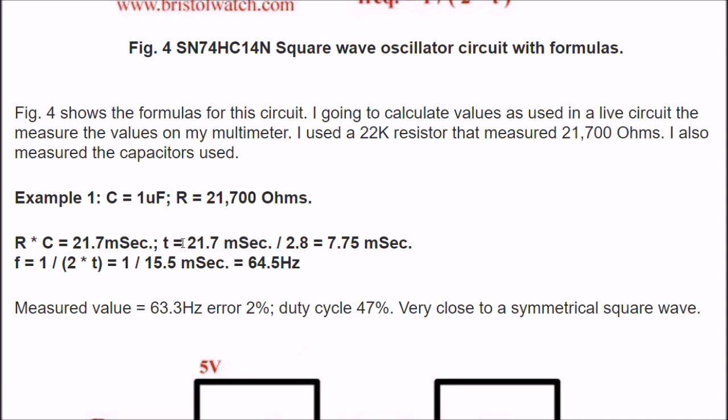Okay, to derive T, I'll take 21.7 milliseconds, divide by 2.8. That's going to give me 7.75 milliseconds.